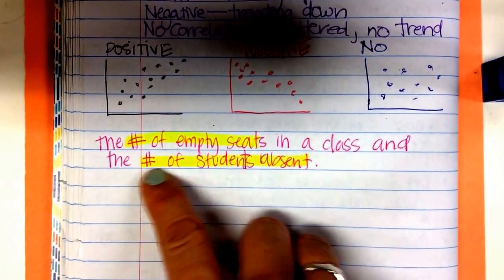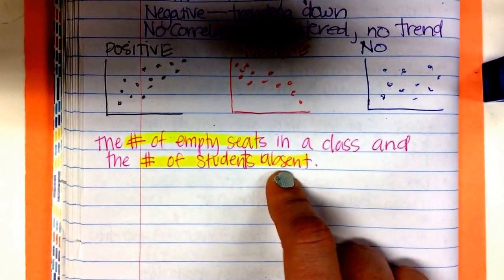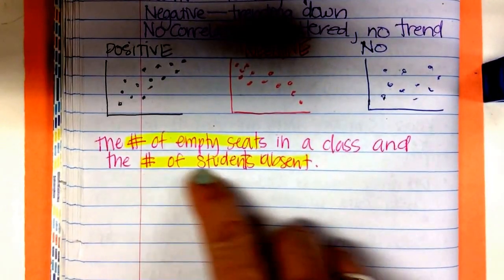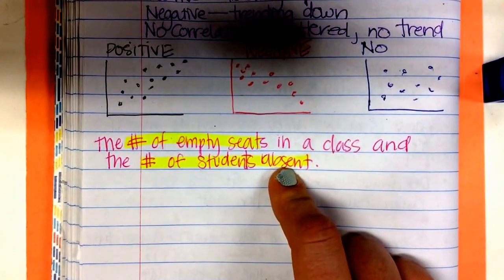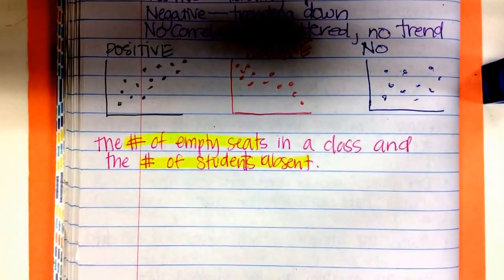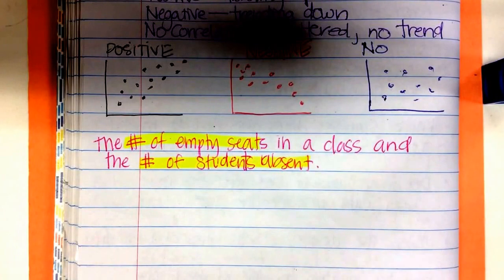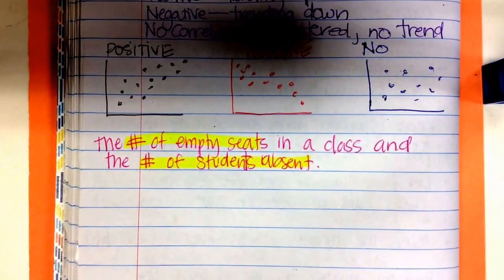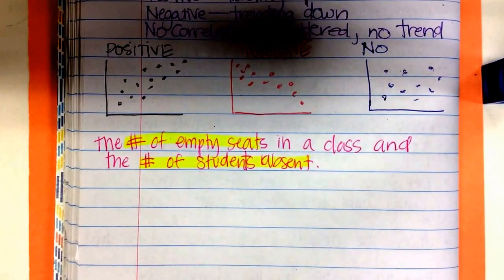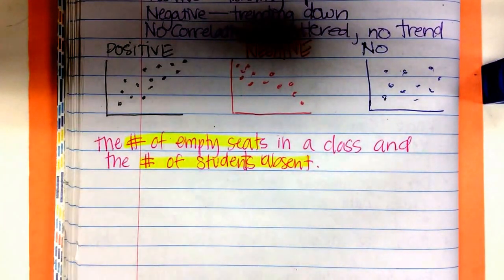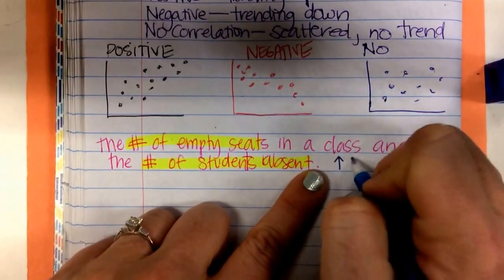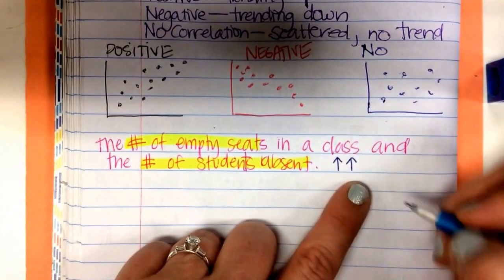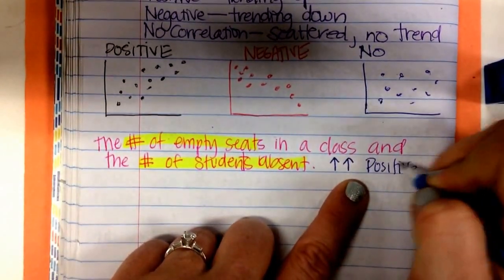So, as the number of students increases, goes up, tell me about the number of students absent. Does that go up? Does it go down? Or is there no correlation? It'll go up. As the seats increase in absence, right? As the number of empty seats increase, so does the number of students. They both tend, trend, going up. And if they both go up, it's a positive correlation.